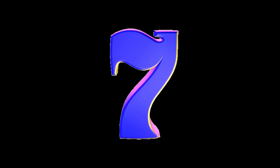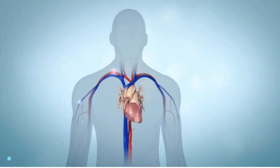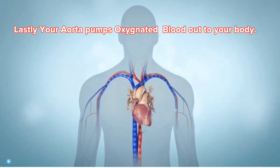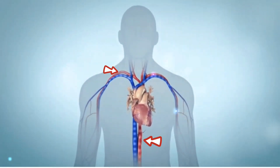Number seven: lastly, your aorta pumps oxygenated blood out to your body and the cycle starts again.